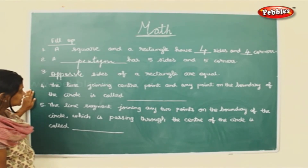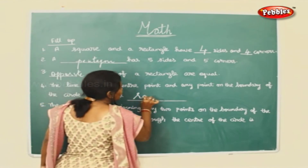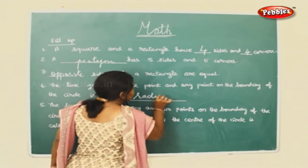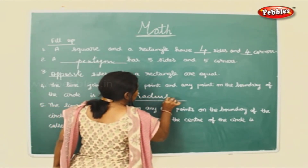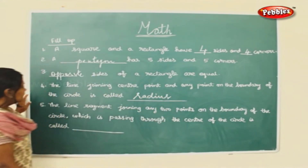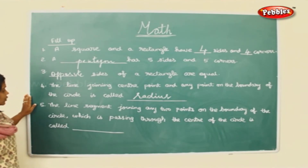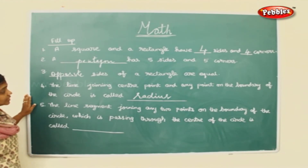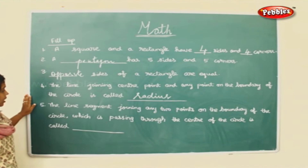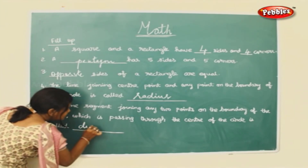The line joining the center point and any point on the boundary of the circle is called the radius. The line segment joining any two points on the boundary of the circle passing through the center of the circle is called a diameter.